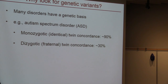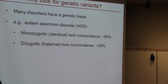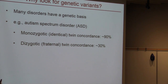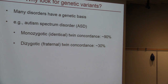We're part of a study called Missing, in collaboration with Google as well as Autism Speaks, which is a charity. Its goal is to sequence the genomes of over 10,000 individuals from families that are affected by autism. Right now we're at about 5 or 6,000 genomes, and our goal is to get to 10,000.